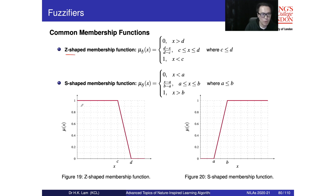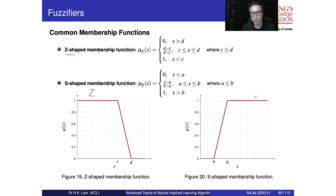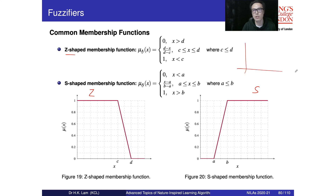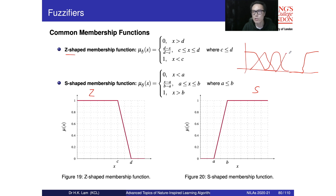We also have the Z-shape — named because it looks like the letter Z — and the S-shape, which looks like the letter S. Typically, Z and S shapes are used at the shoulders of the membership function domain, with triangle, Gaussian, or trapezoid shapes used in the middle.